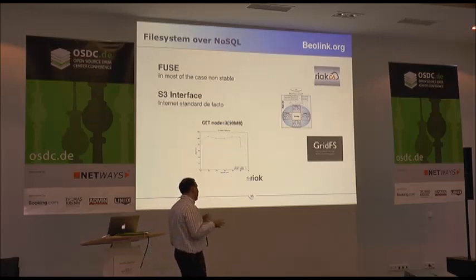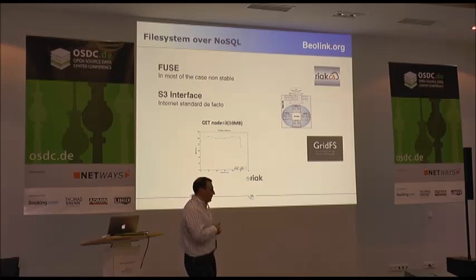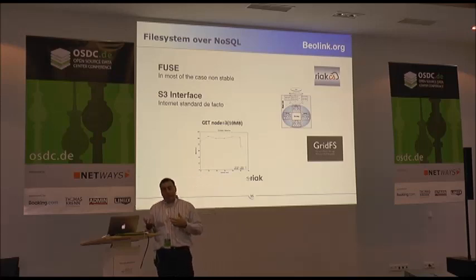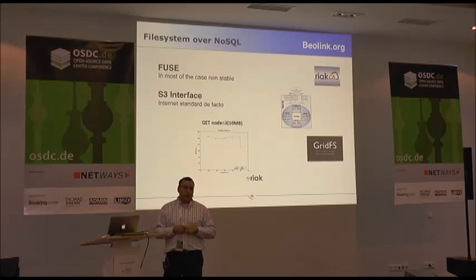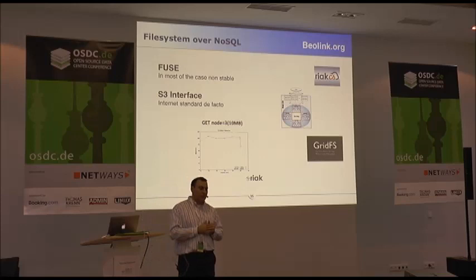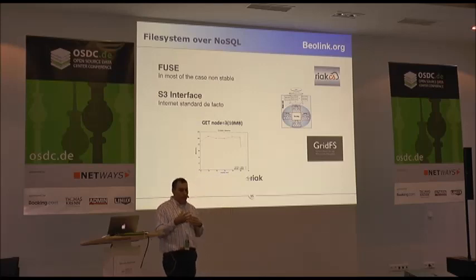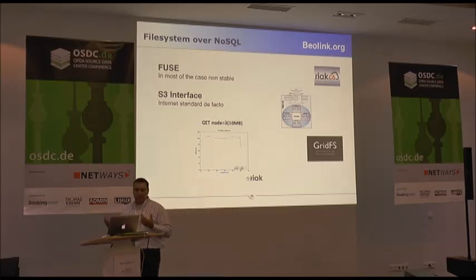I've seen that Riak has a specific application called CS (Riak CS) — with three nodes you are able to run close to 100 megabytes per second. The advantage is you can store the nodes where you want, in different data centers. Not different regions — different regions are always a bit of a pain. Also, in case of high latency, sometimes it's nice to use the pool cache and use weak consistency, otherwise it's too slow.